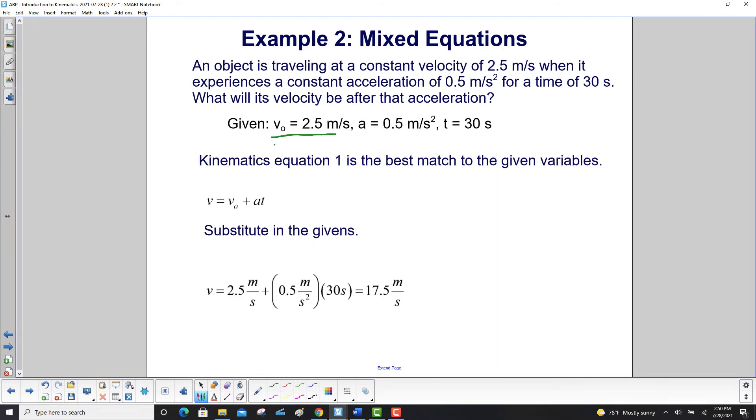We list our givens: here's our initial velocity, here's our acceleration, and here's the time of the acceleration. Based on that, kinematics equation 1 is the best match for the given variables.